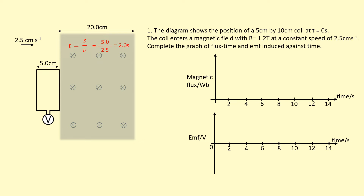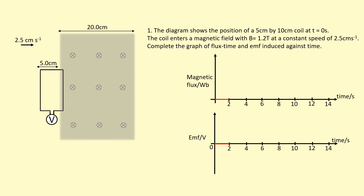How long does it take to travel 5 centimetres at 2.5 centimetres per second? Divide the distance by the speed to get the time — it takes two seconds. During those two seconds there is no magnetic flux through the coil; it hasn't entered the field yet, so flux is zero. There's no change in flux either, so the EMF induced is zero.